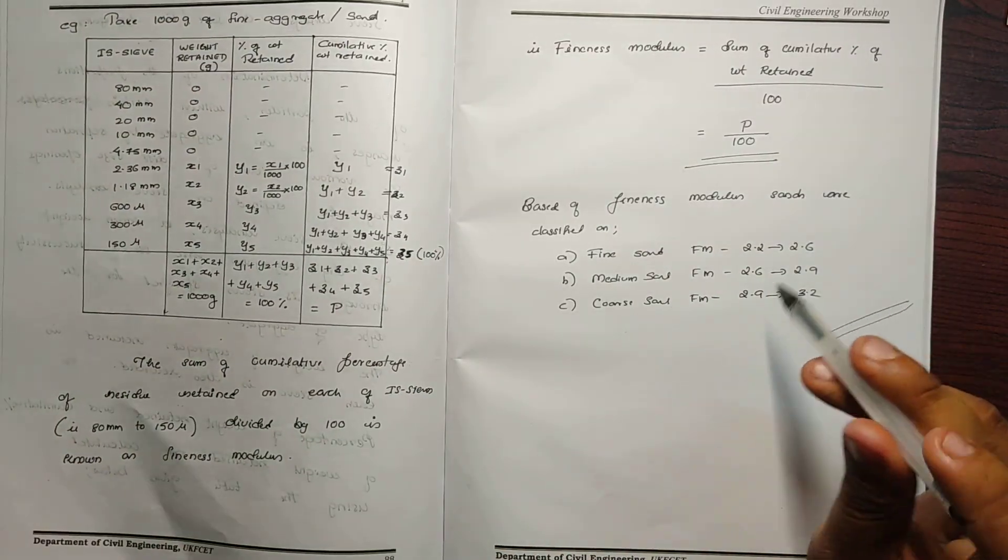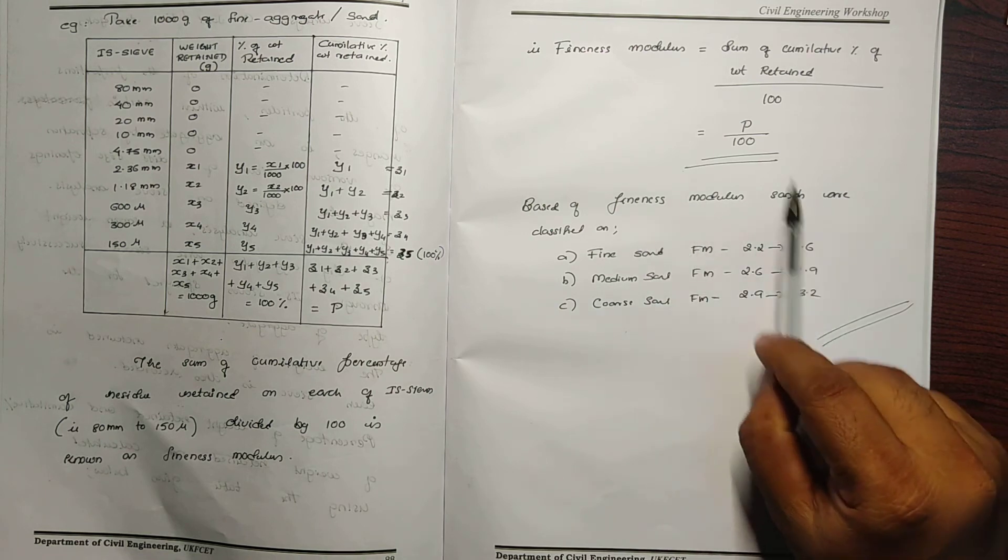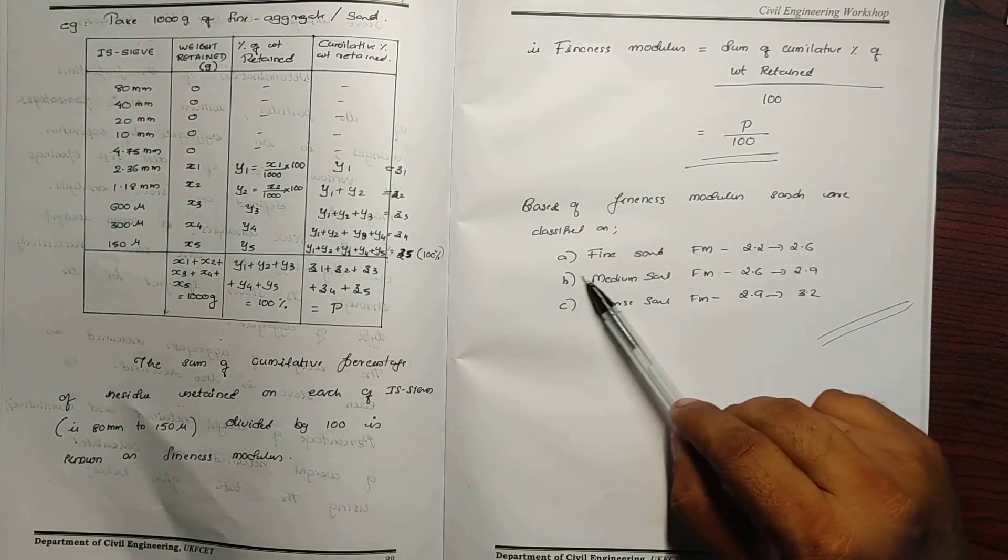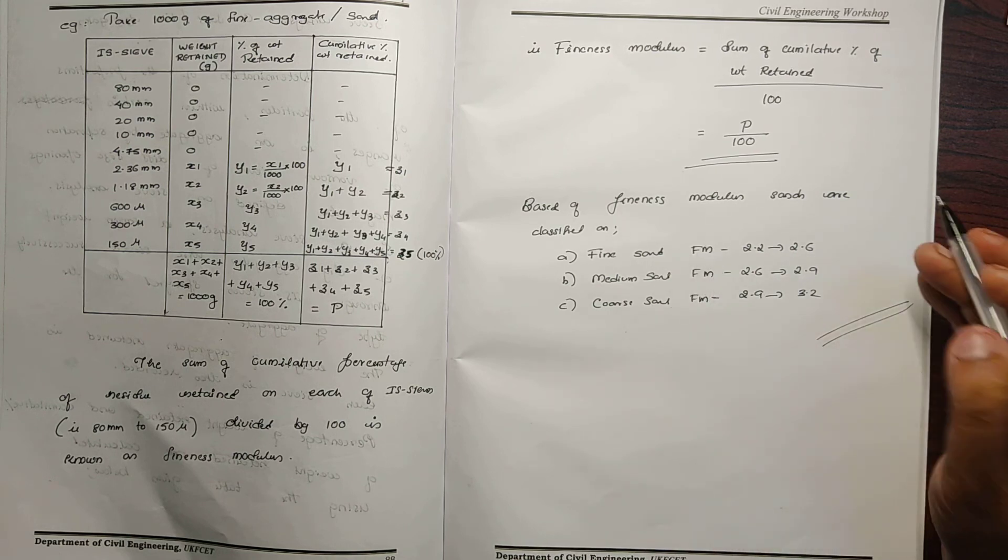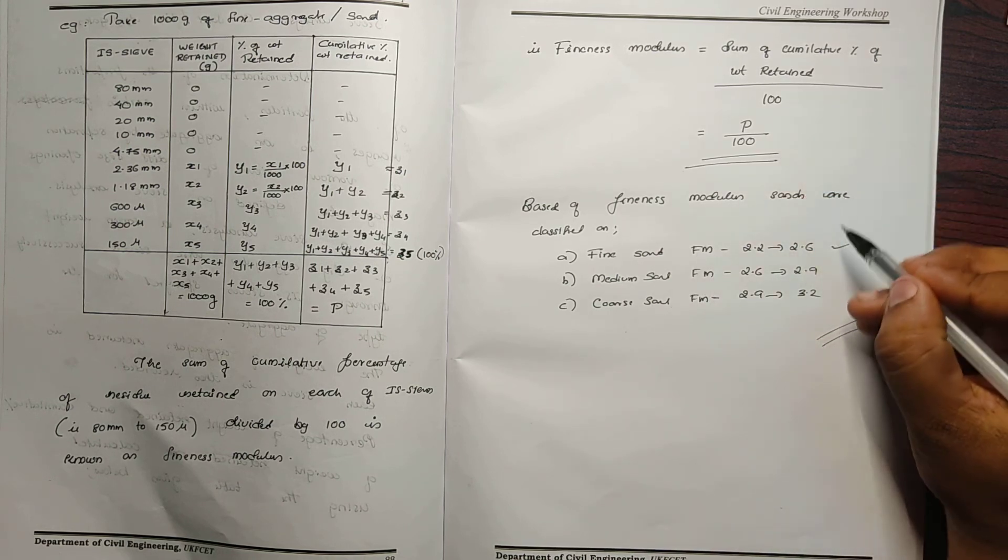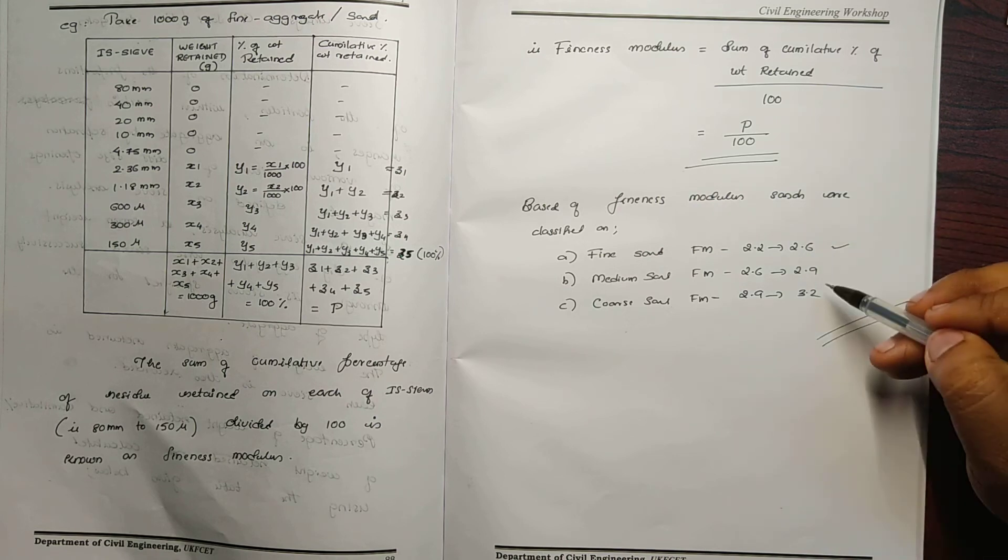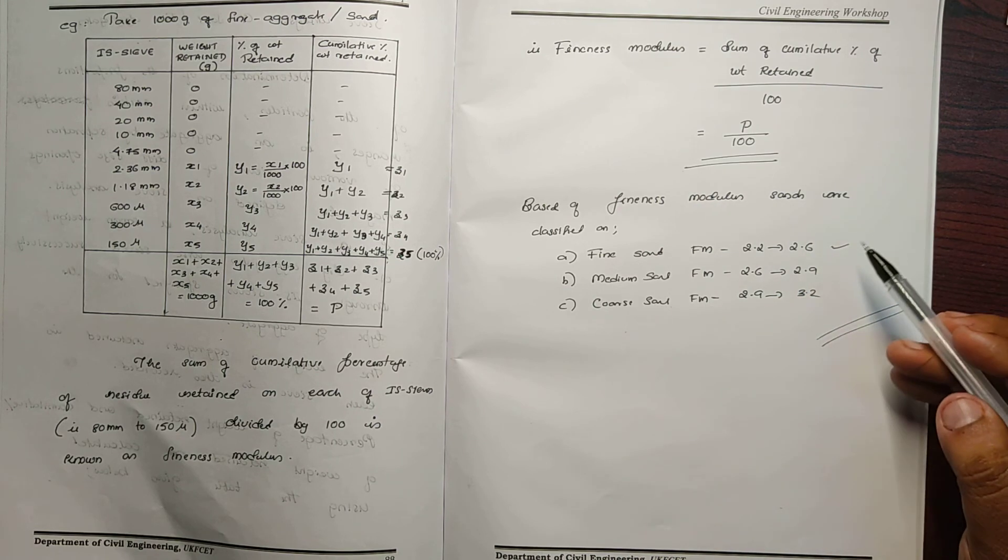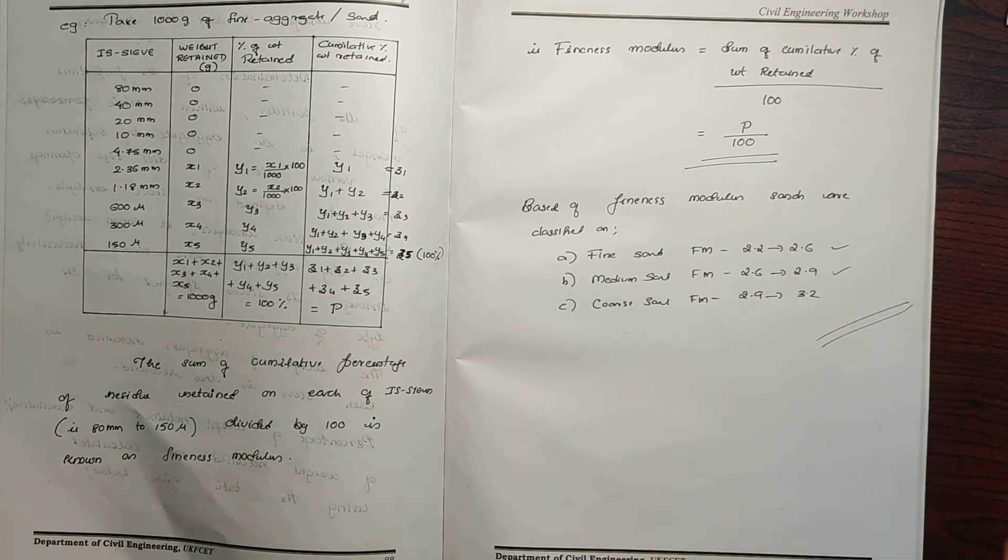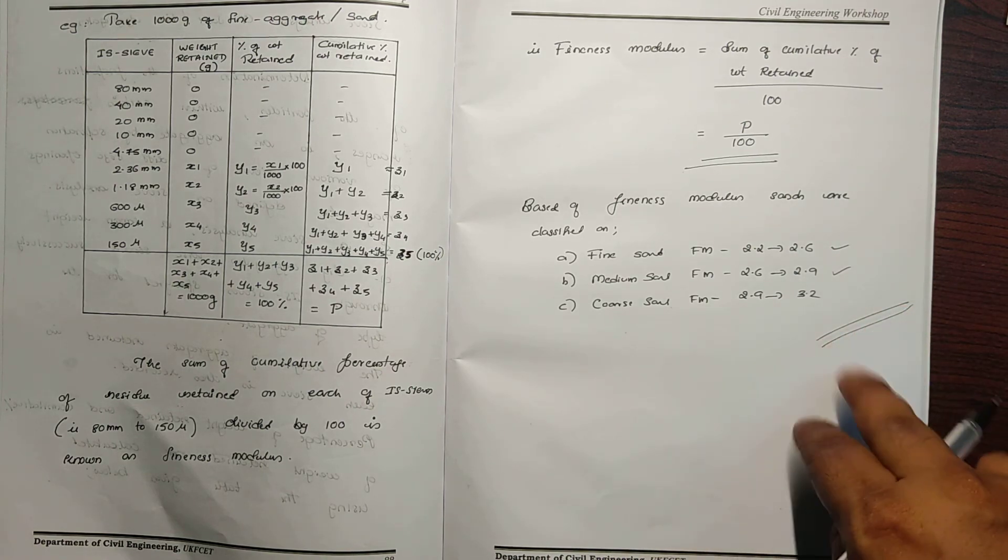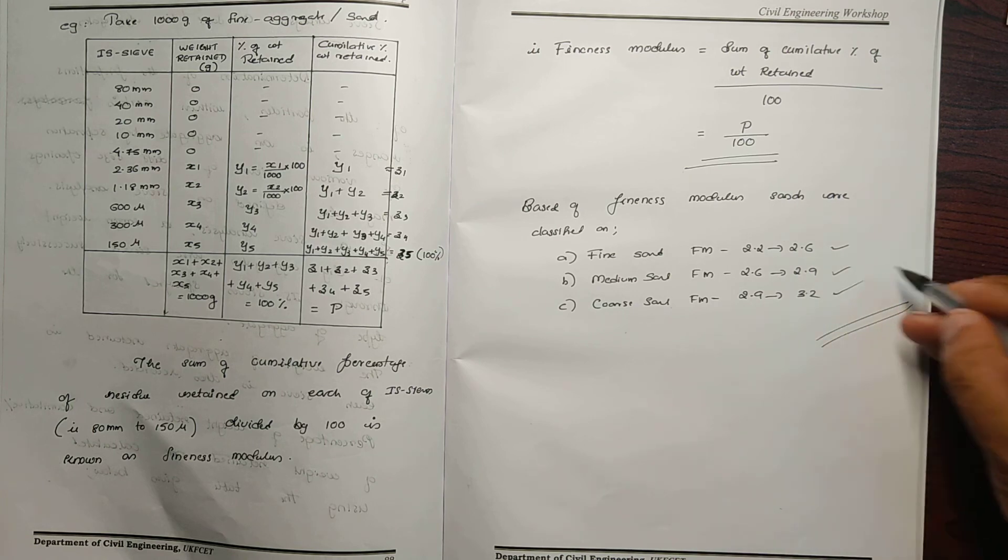Based on fineness modulus, sand is classified into fine sand, medium sand, and coarse sand. Fine sand has a fineness modulus between 2.2 to 2.6. Medium sand is between 2.6 to 2.9, and coarse sand has a fineness modulus between 2.9 to 3.2.